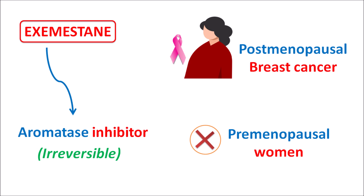Exemestane is a steroidal drug. Because of its steroidal structure, this drug can strongly bind to the enzyme aromatase, and that is why it acts as an irreversible enzyme inhibitor.